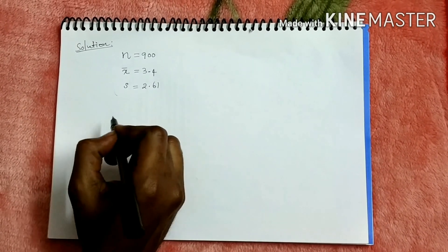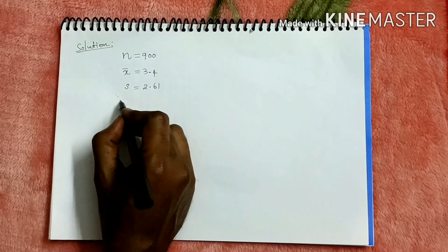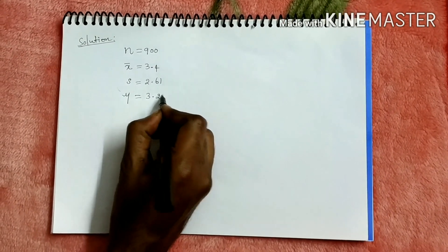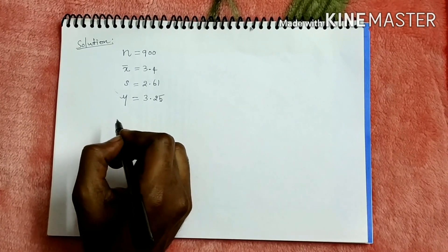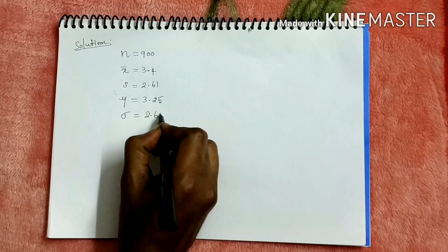Is a sample from a large population of mean, so population mean is given. That means mu is given, mu is 3.25 cm. Population standard deviation sigma is given, sigma is 2.61.